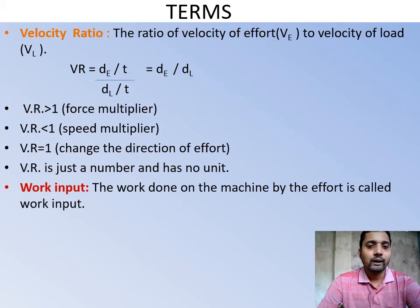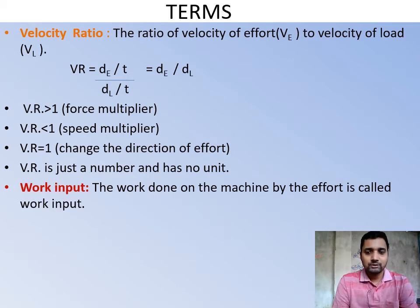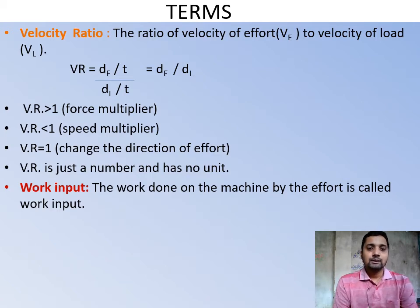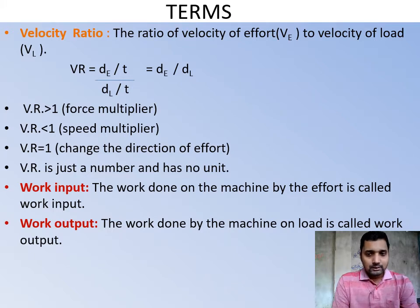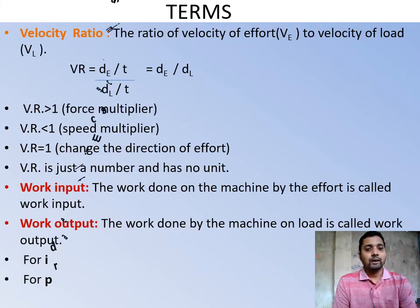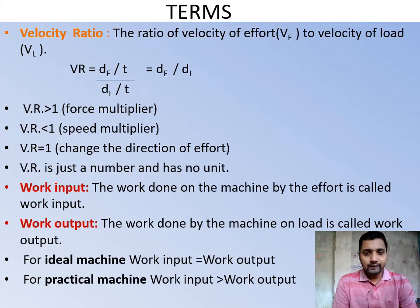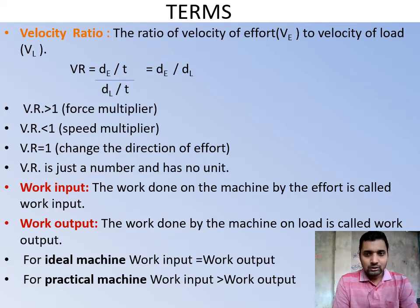Now, work input means how much work is done on the machine. Work = force × displacement, so work input = effort (E) × displacement of effort (d_E). Work output means how much work is done by the machine, so work output = load (L) × displacement of load (d_L). For an ideal machine, work input equals work output. For a practical machine, work input is always greater than work output because some energy is wasted due to friction and other energy losses.